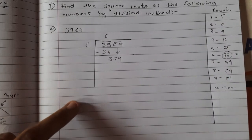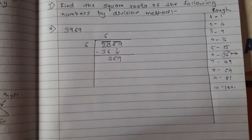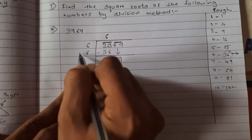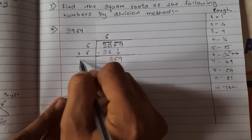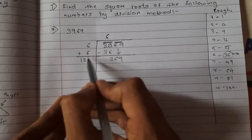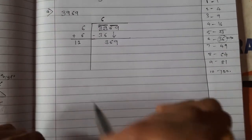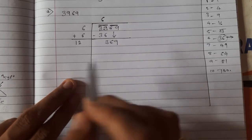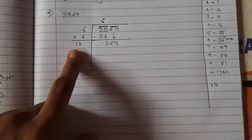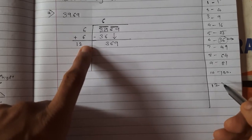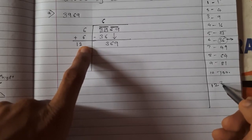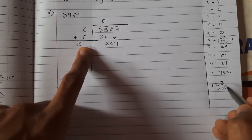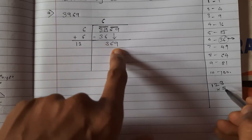Now whatever number you wrote in the quotient — that is 6 — you write it again and add it: 6 + 6 = 12. Leave some space here. Now you have to bring a number which when placed next to 12 and multiplied by itself gives a result nearest to 369. Suppose you write 3 here, then you multiply 123 × 3.